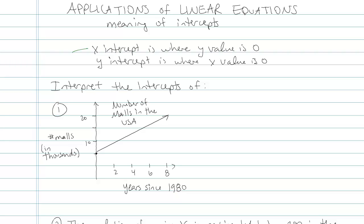Quick reminder: the x-intercept is where the y-value is zero, the y-intercept is where the x-value is zero. And it's really important that we focus here on the units and the scale. What are we measuring? What are we talking about on the x and y-axes?